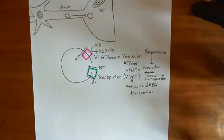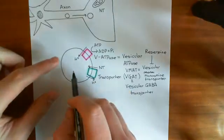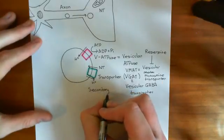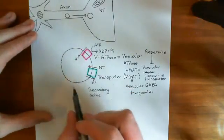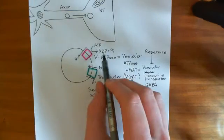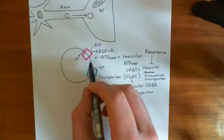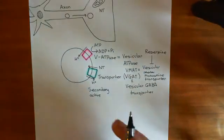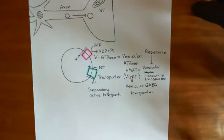These transporters are transporting the neurotransmitter into the vesicles in exchange for moving the protons out, using the proton gradient established by the vesicular ATPase. It's an example of secondary active transport — secondary active transport means you're using the concentration gradient of an ion to move your substance in, rather than directly coupling it to ATP hydrolysis. The proton pumping by the V-ATPase is primary active transport; then we let the proton go down its ion gradient in exchange for moving our neurotransmitter in, which is the secondary active transport.